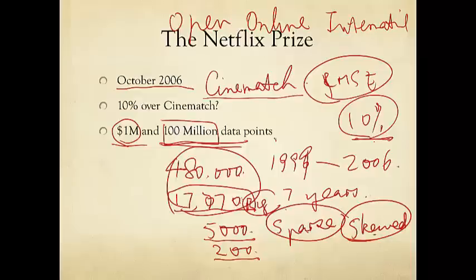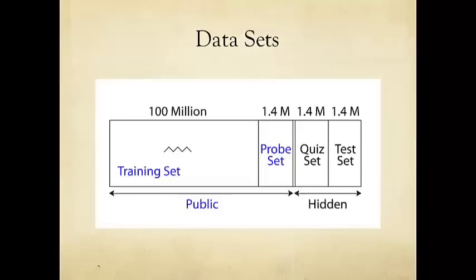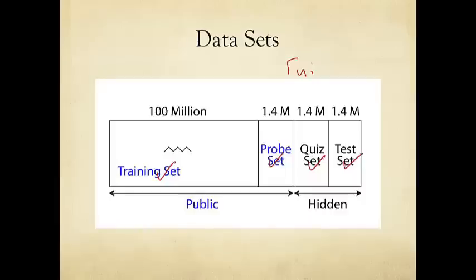Let's take a quick look at the data set. The entire data set — a little over 100 million rating entries — was divided into four parts: the training set, the probe set, the quiz set, and the test set. The training and probe sets were made public, big enough to be interesting but small enough to fit on a normal laptop in 2006. The quiz and test sets were hidden — only Netflix had the ground truth, and competitors did not have access to this actual data.